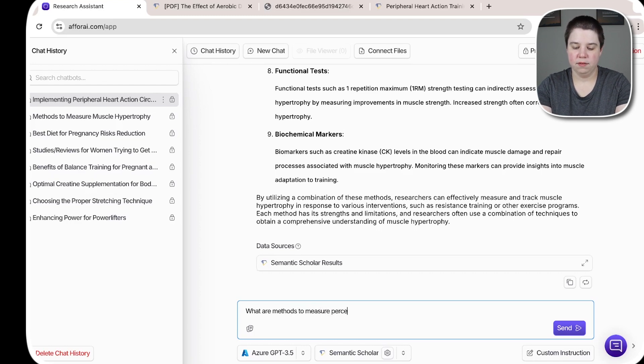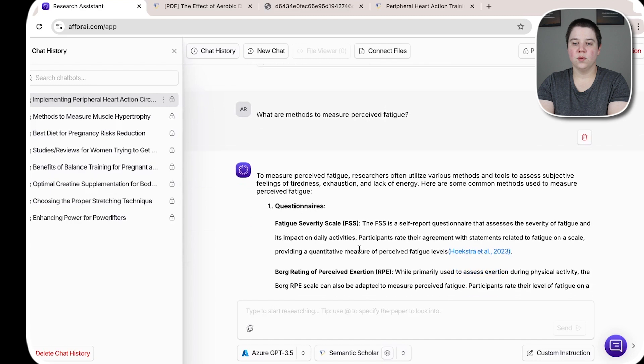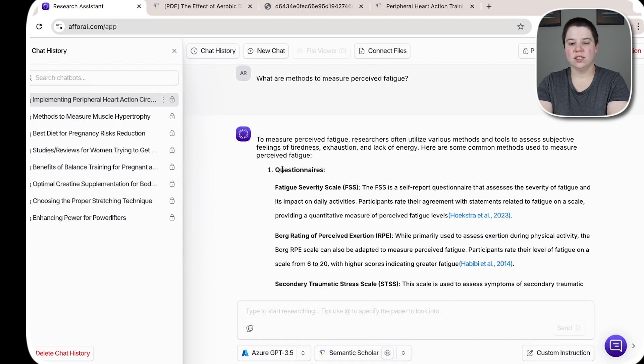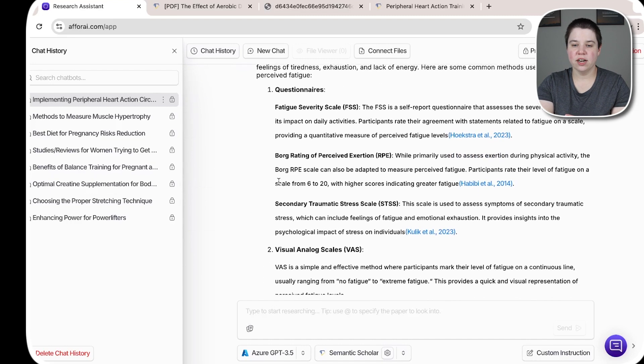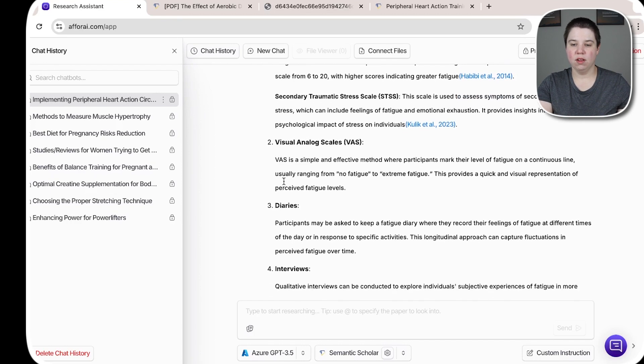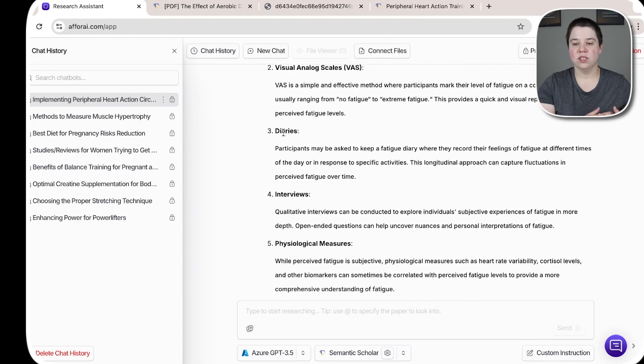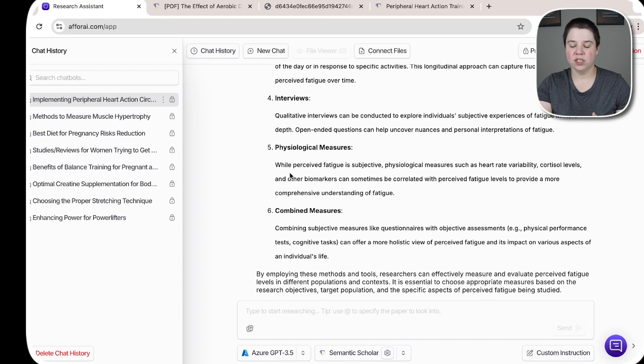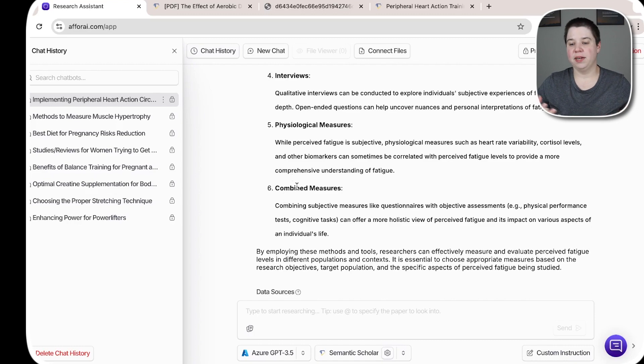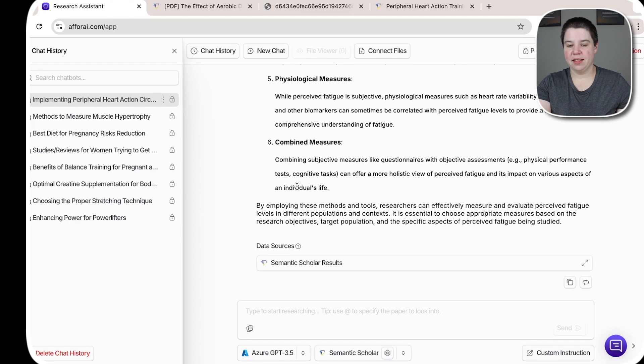We're gonna actually do perceived fatigue. And so we can see here that it's giving us several different measurements. So the first one is questionnaires. So there's like actually already created scales that we can use, we can use visual analog scales, diaries, so just recording their feelings, interviews, physiological measurements, and then combine measurements. So we might combine multiple of these measurements together.